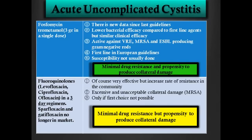Regarding quinolones — levofloxacin, ciprofloxacin, ofloxacin — note that sparfloxacin and gatifloxacin are no longer on the market. In a three-day regimen, they are very effective, but the propensity to produce collateral damage is really high due to selection of multidrug-resistant organisms, most importantly MRSA, because of effects on fecal flora and vaginal flora. At UofL in our outpatients, resistance to ciprofloxacin and levofloxacin is around 26% — above the breakpoint that precludes their empiric use. Excessive collateral damage makes quinolones unacceptable for treating acute uncomplicated cystitis.